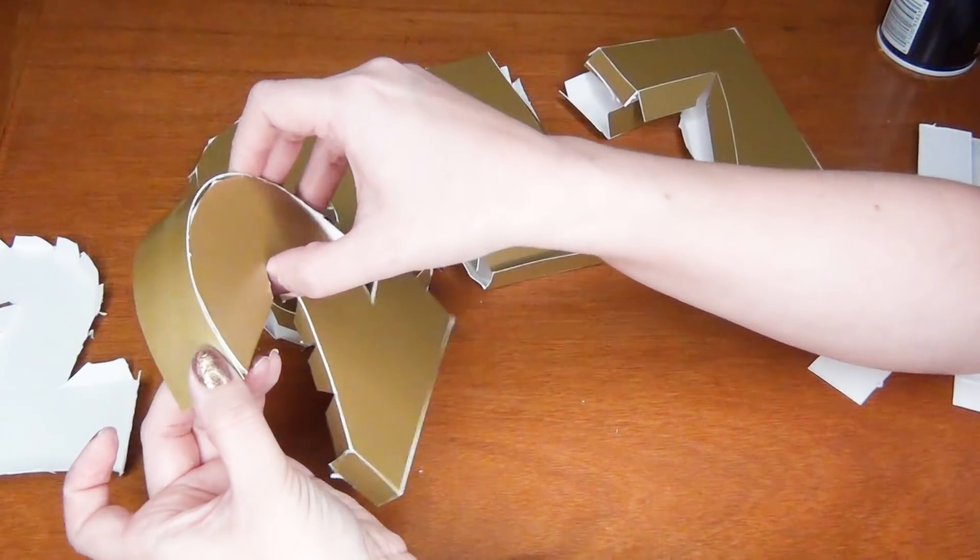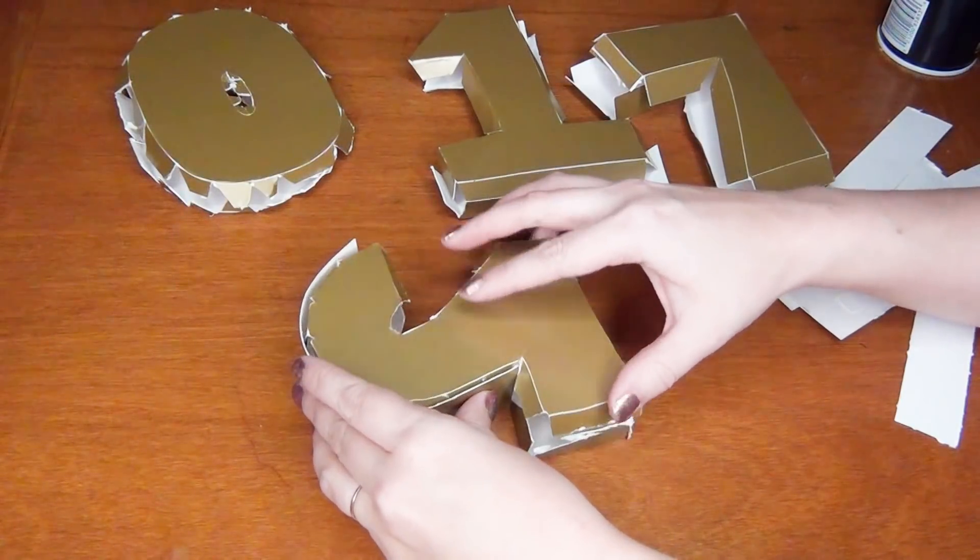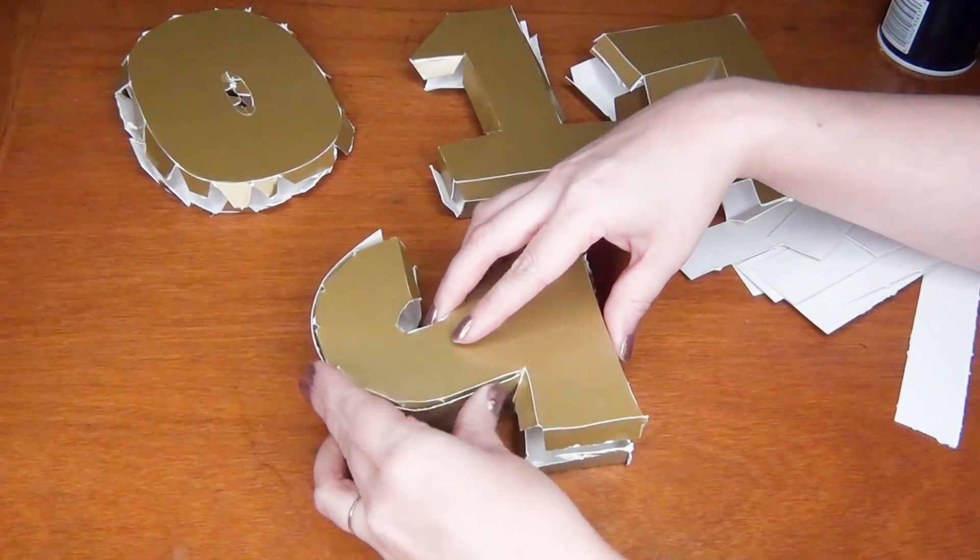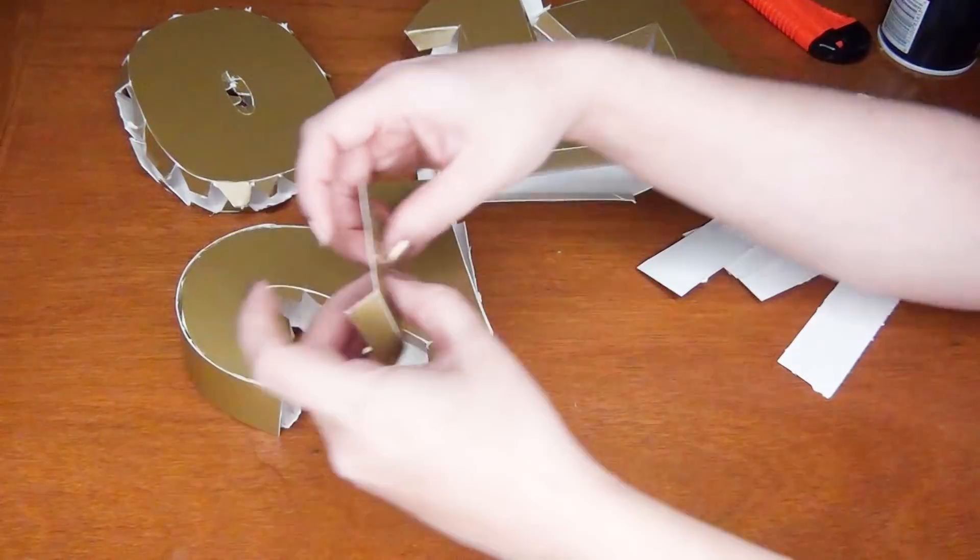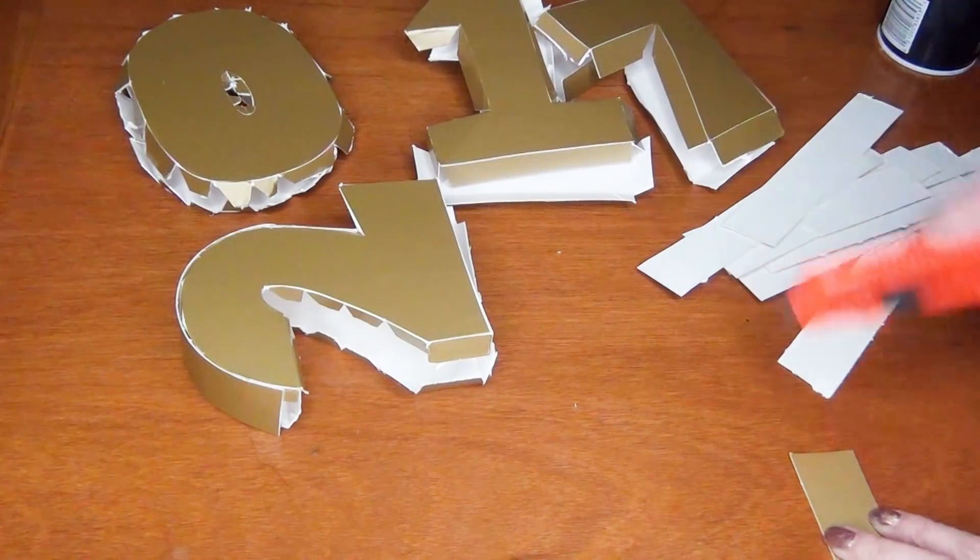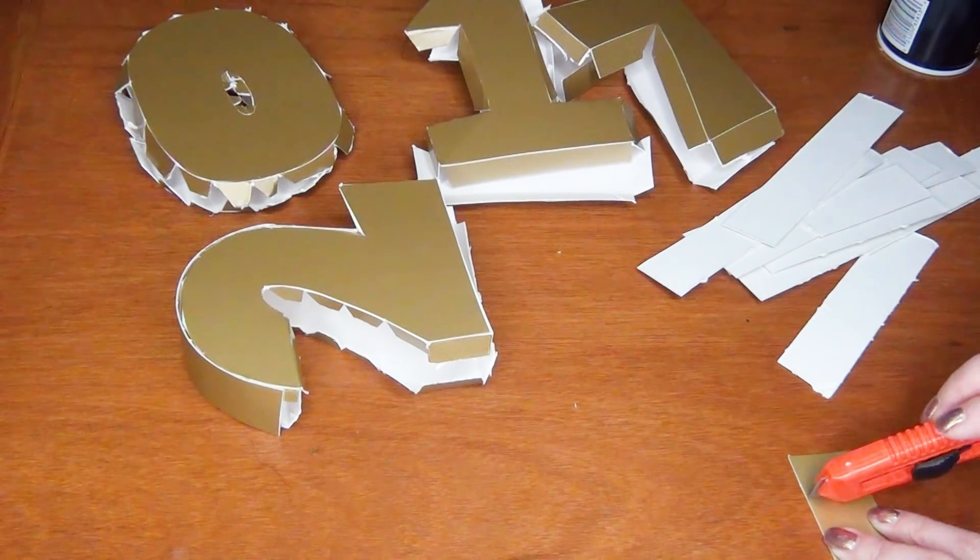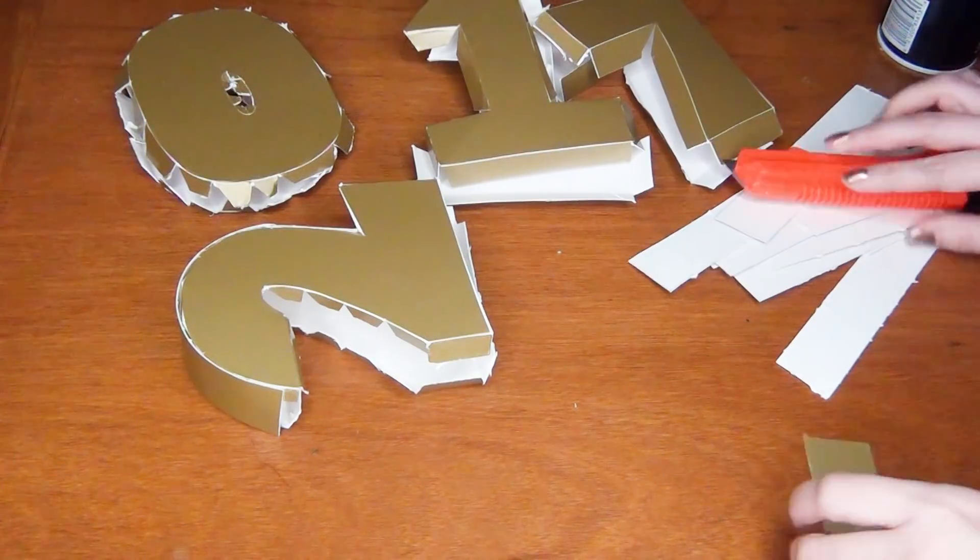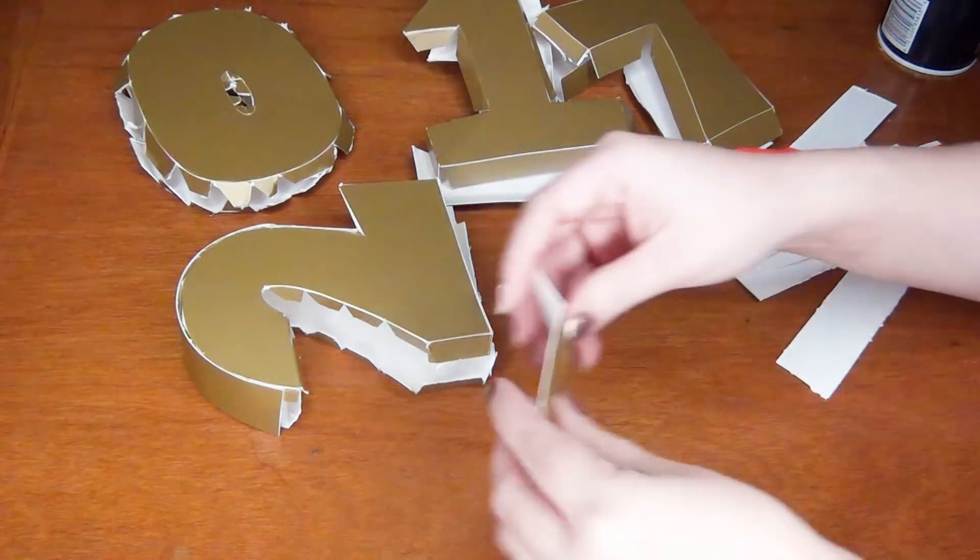You'll have to use several pieces for each number, and whenever you get to a corner of a number, I recommend that you score it so it will provide a clean bend around the corner. In addition to this, it's also best to pre-bend these strips before you try and adhere them, that way they're already going to hold the shape that you need to form them into.